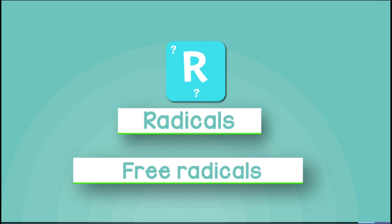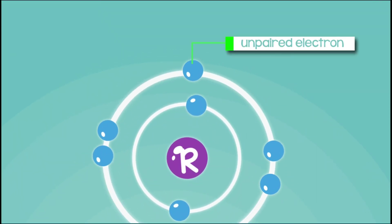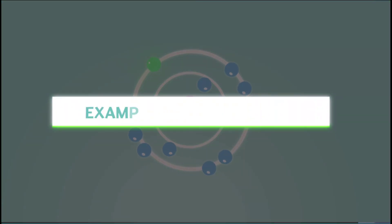In chemistry, radicals are very special. They have unpaired electrons, which are like their special power. These unpaired electrons make radicals very energetic and ready to join in chemical reactions. We will learn more about electron pairing in the future, but for now, let's look at some examples of radicals.